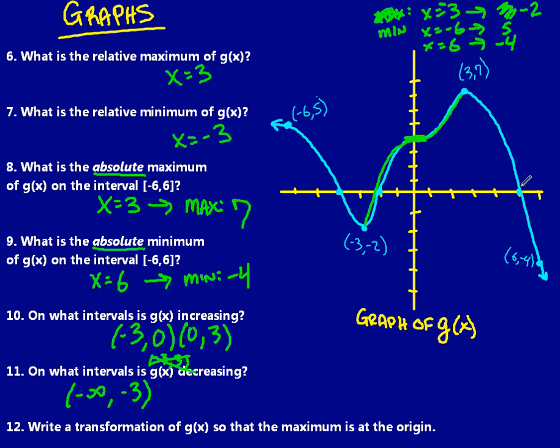The last part, decreasing here from 3 all the way to everything else. So from 3 to infinity is where I have a decreasing region.